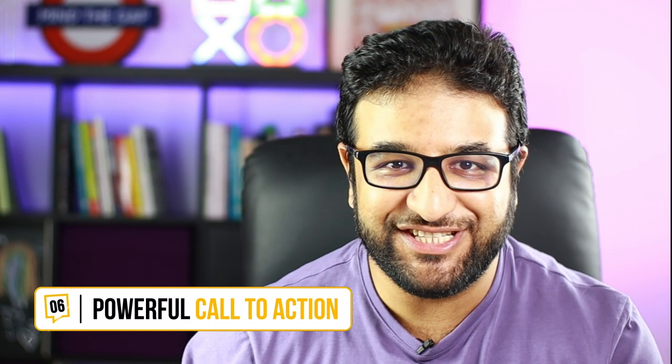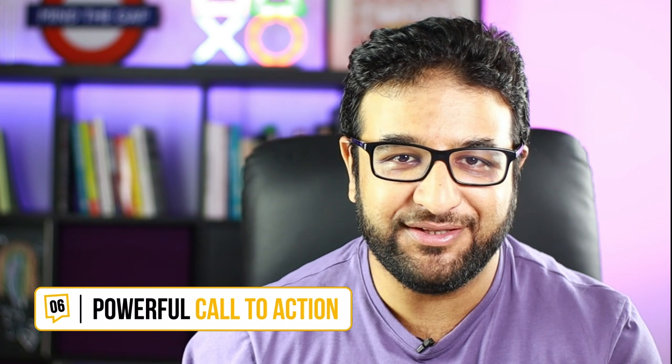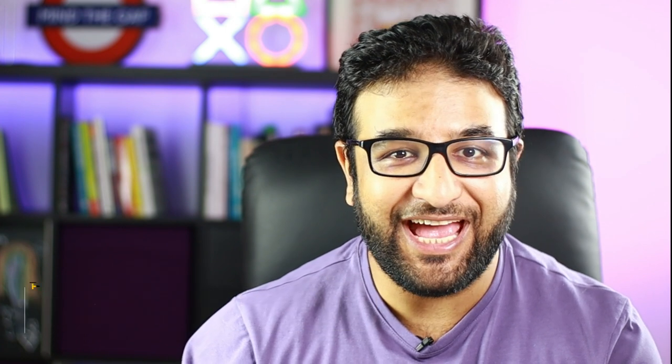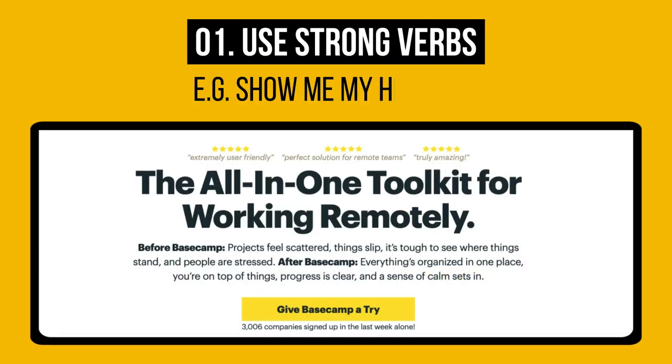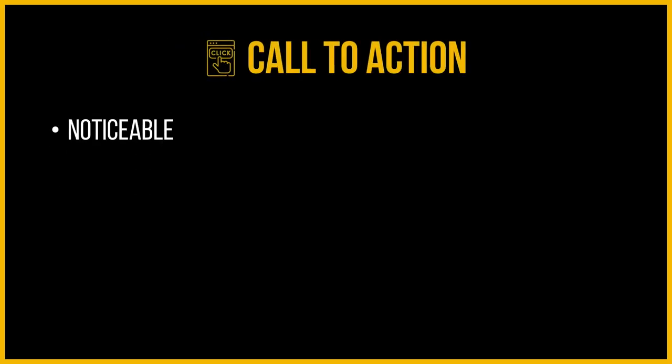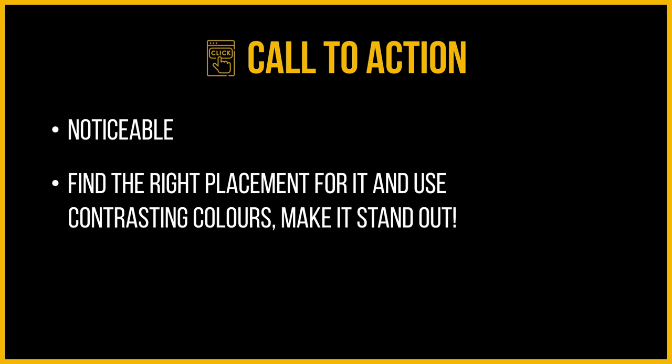A call to action, or CTA, is one of the most important parts of a lead generation landing page, as it tells the user what to do next. To have an effective call to action, consider these four things: use strong verbs — check out this example from Basecamp. Your call to action should also be noticeable, so find the right placement for it, use contrasting colors, and make it stand out.